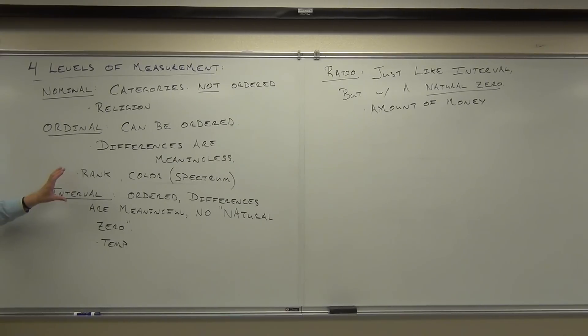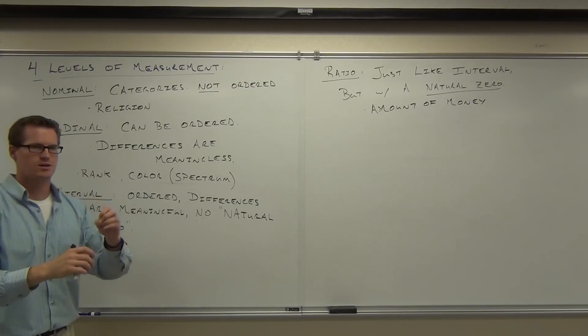Interval. They can be ordered. The differences are meaningful. That's our temperature version, where we can say one temperature is this much hotter than another one. It gives us some reasonable scale that we can think about and it makes sense to us. And then it just doesn't have a natural zero, which means that zero doesn't mean there's none of something.